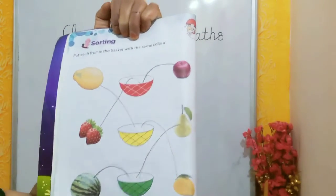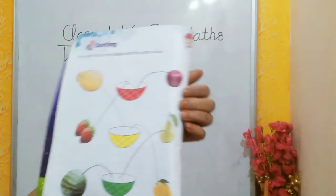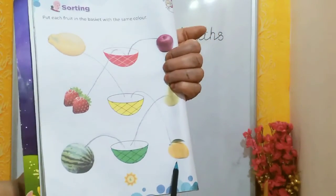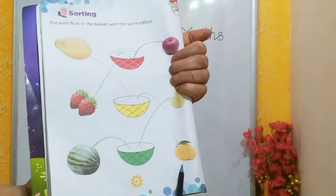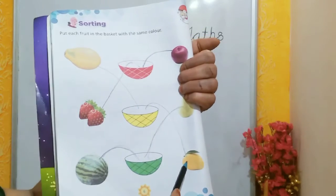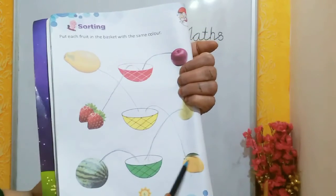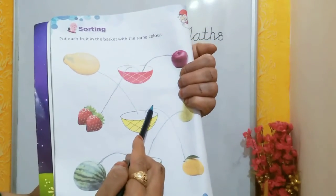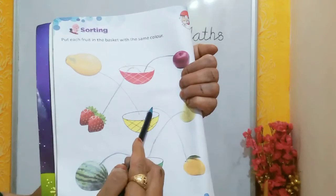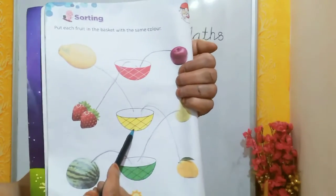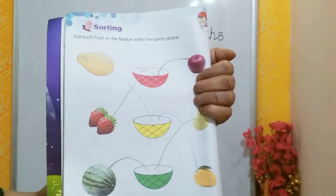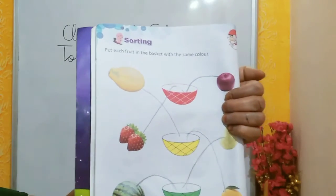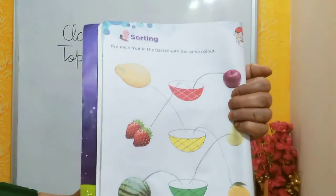Now, last is mango. What is the color of mango? Yellow. So we will put the mango in the yellow color basket. Okay? Understood, children. Bye, and take care.